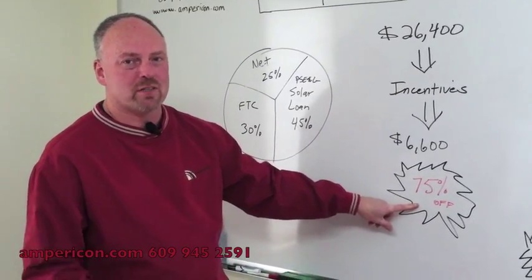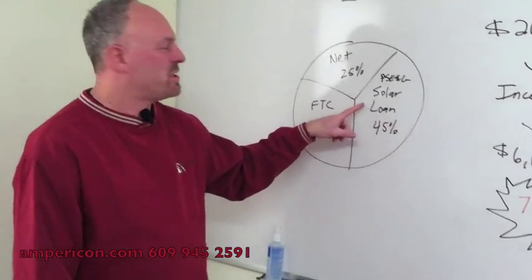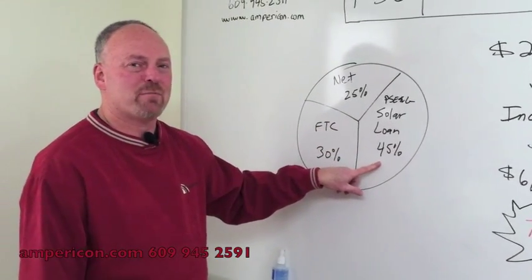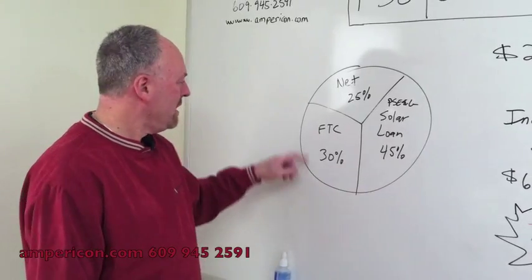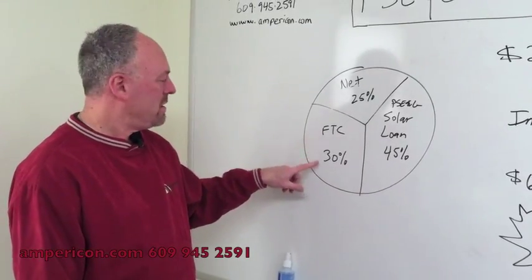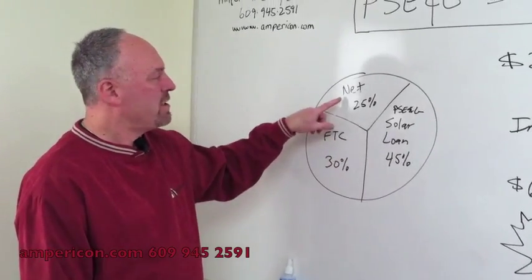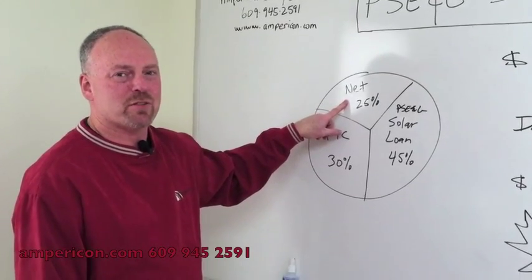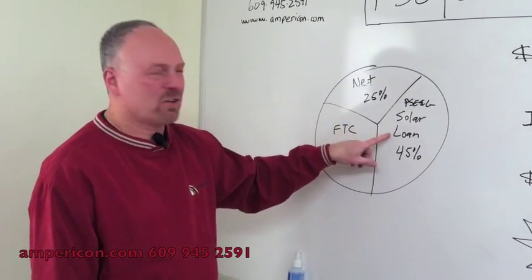You like pie charts? Let's check this pie chart out. PC&G solar loan is going to cover 45%, federal tax credit another 30%, and your net out-of-pocket is only 25%.